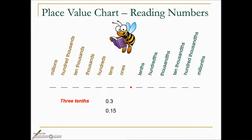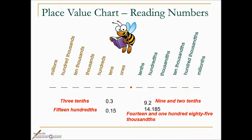The next number looks like fifteen, and because the five is in the hundredths place, we call it fifteen hundredths. Some may say 9.2, and we would understand that, but if we're being proper in the math world, we would say nine and two tenths. The next number is fourteen and one hundred eighty-five thousandths, because the five is landing in the thousandths decimal place.